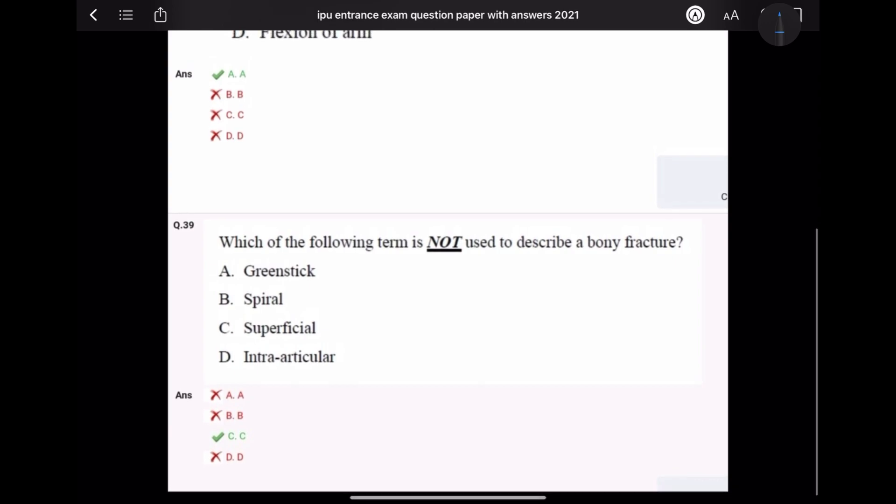Question 39: Which of the following terms is not used to describe a bone fracture? Superficial is not a term used to describe bone fracture. Transverse fracture and comminuted fracture are types of fractures. So answer is C, superficial.